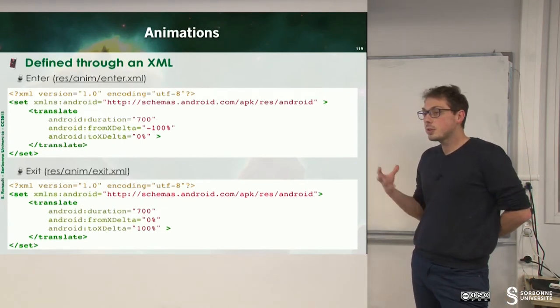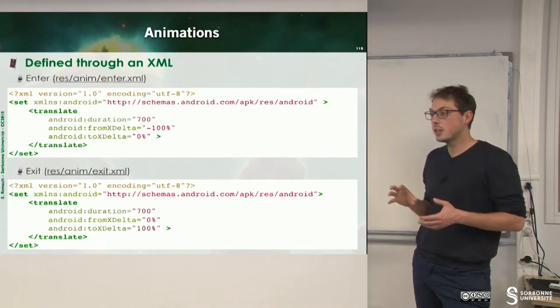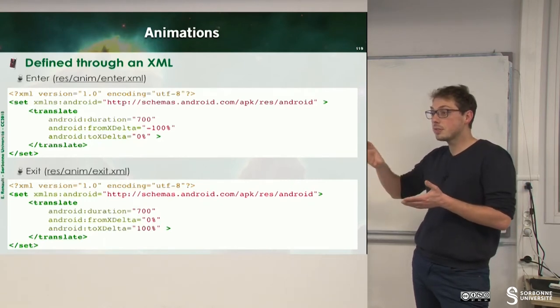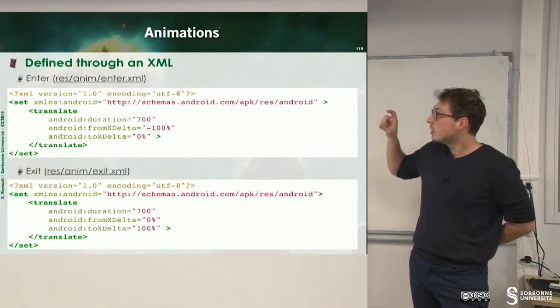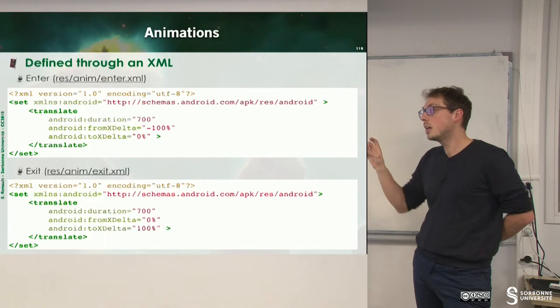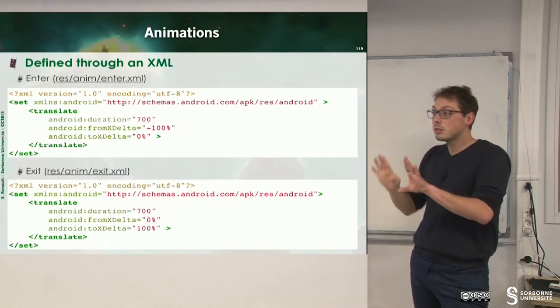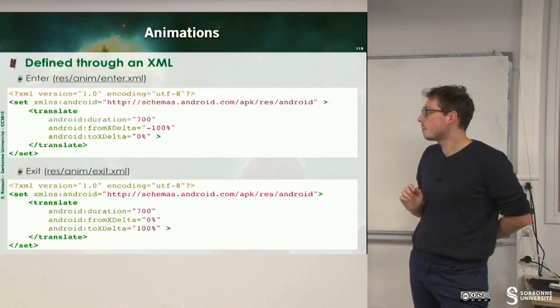When you use fragments, you can choose to perform some animation during the enter or the exit of the fragment. To do that, you only have to define some small XML that will fix the duration, the delta x, delta y, that will provide the path of the fragment to go to the screen. These are two examples of animations you can do.